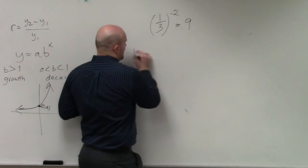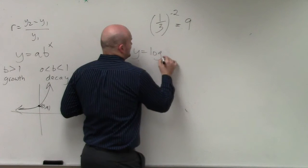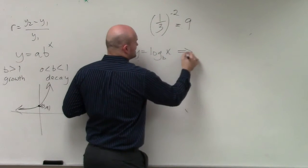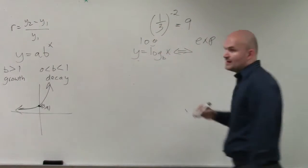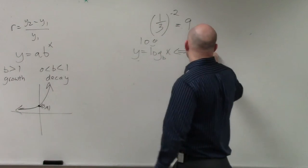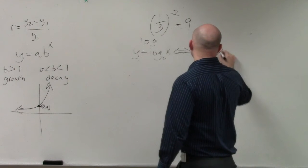So I gave you guys some formulas. y equals log base b of x. And if we wanted to convert that, that was what we called log form. And if we want to convert that, we'd write it in exponential form. The formula I gave you was b to the y equals x.